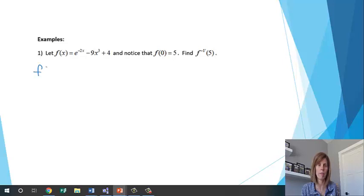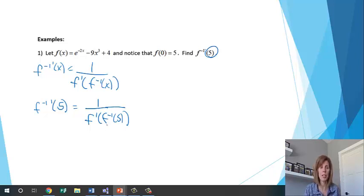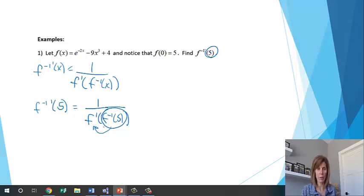The first thing I'm going to do is write that formula: the derivative of the inverse is 1 over f prime of f inverse of x. Since it says to find the derivative at 5, I'll rewrite this formula with the number plugged in. This is a composite function, so I need to find what the inverse of 5 is first, then calculate the derivative of f at that value.